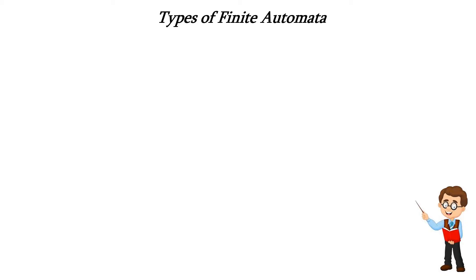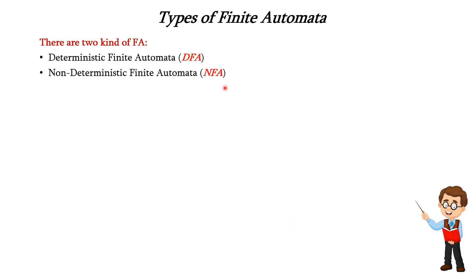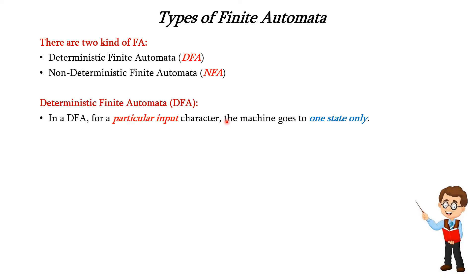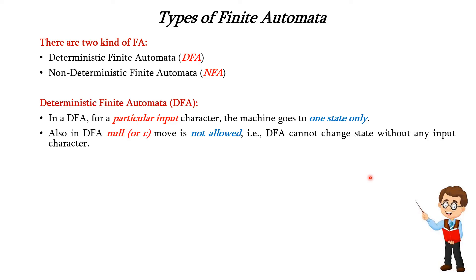Next we will see the types of finite automata. There are two kinds: one is Deterministic Finite Automata, called DFA, and another is Non-Deterministic Finite Automata, called NFA. In DFA, for a particular input character, the machine will go to only one state — the transition for one input character leads to only one state. Also, in DFA, null or epsilon moves are not allowed; DFA cannot change state without any input character.